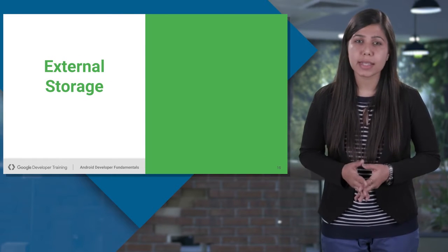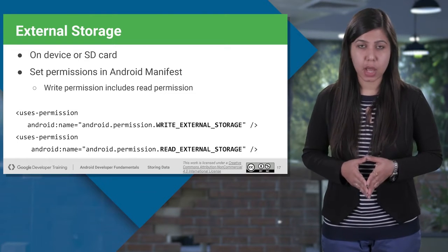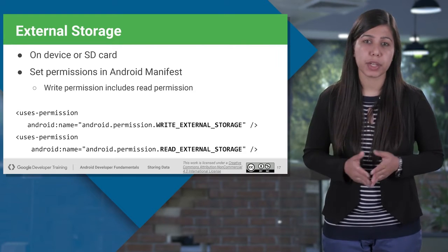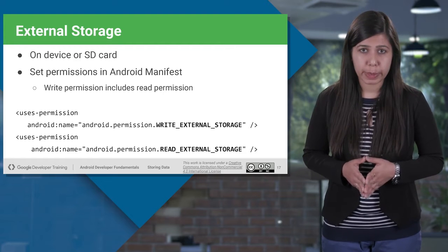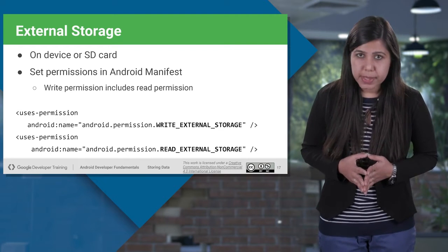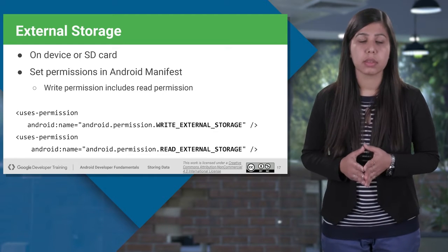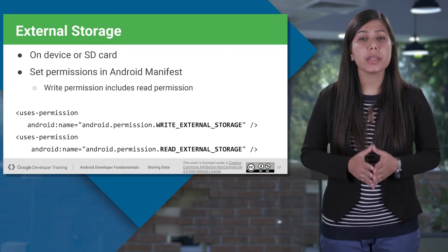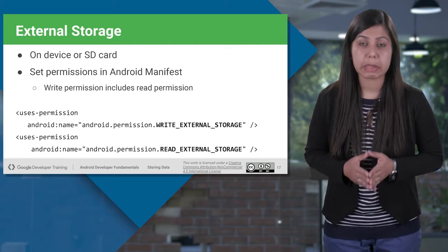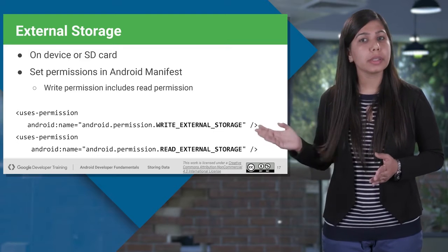Now let's check out more about external storage. We already know how to save data on SD cards, and on some devices the permanent storage space is divided into internal and external partitions, so even without a removable storage medium there are always two storage spaces. To access or write to external storage spaces, you must request the WRITE_EXTERNAL_STORAGE permission in your manifest file. This is how you set the permission using the uses-permission element for WRITE_EXTERNAL_STORAGE and READ_EXTERNAL_STORAGE.